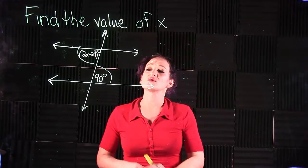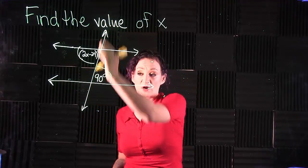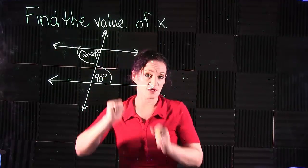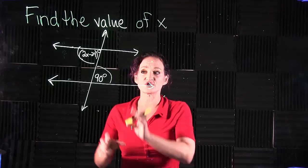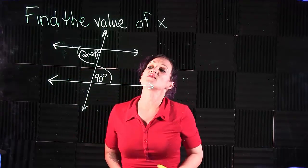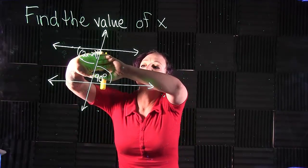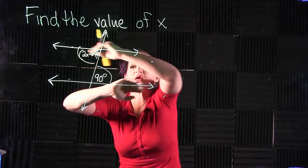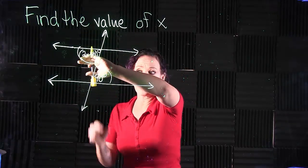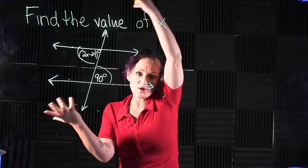These two angles are on alternate sides of our transversal—one on this side, one on this side. That gives us an alternate relationship. Then these angles inside here, in between the two parallel lines, are called the inside angles. On the outside over here, well,